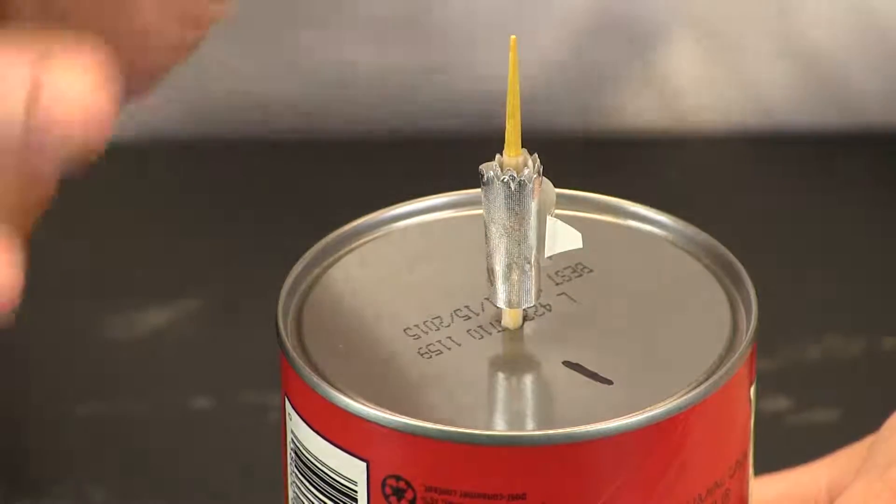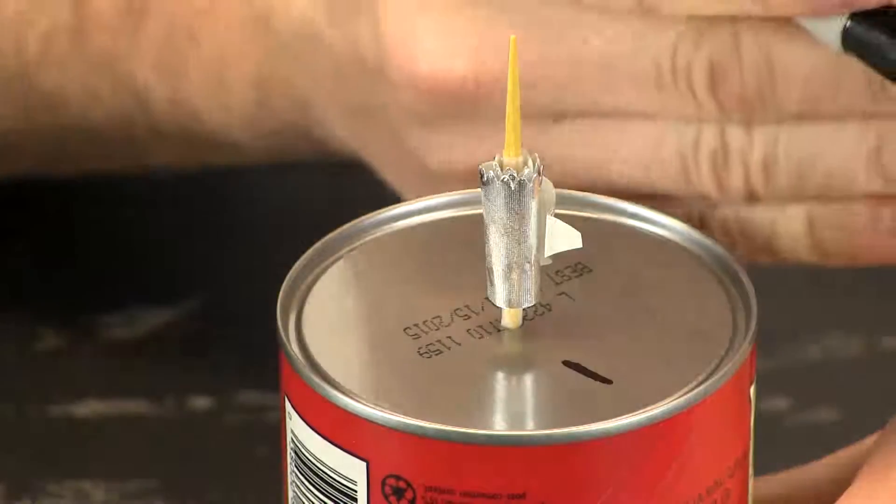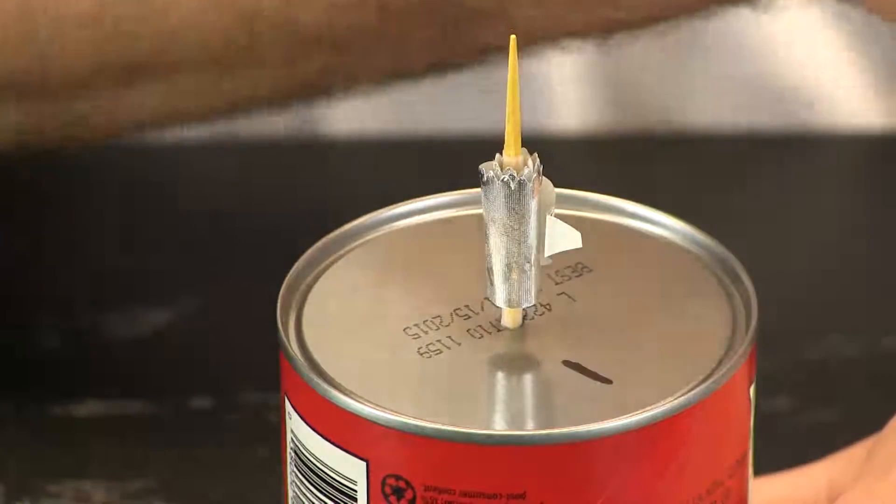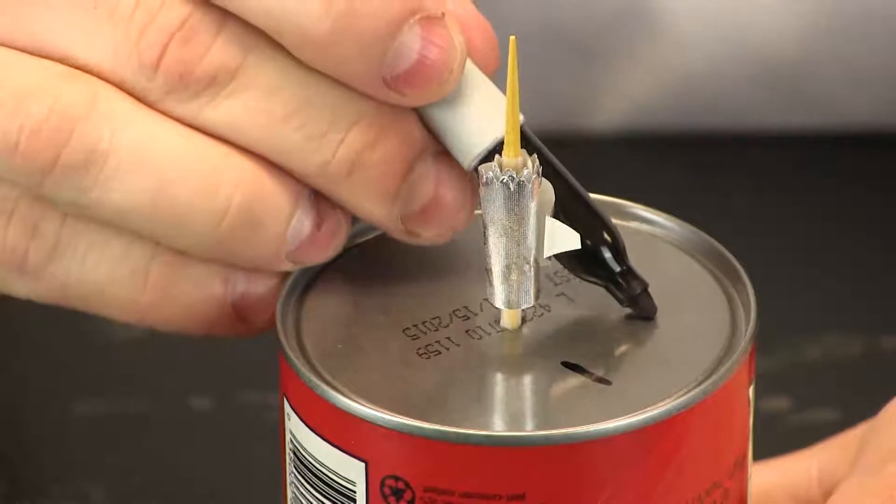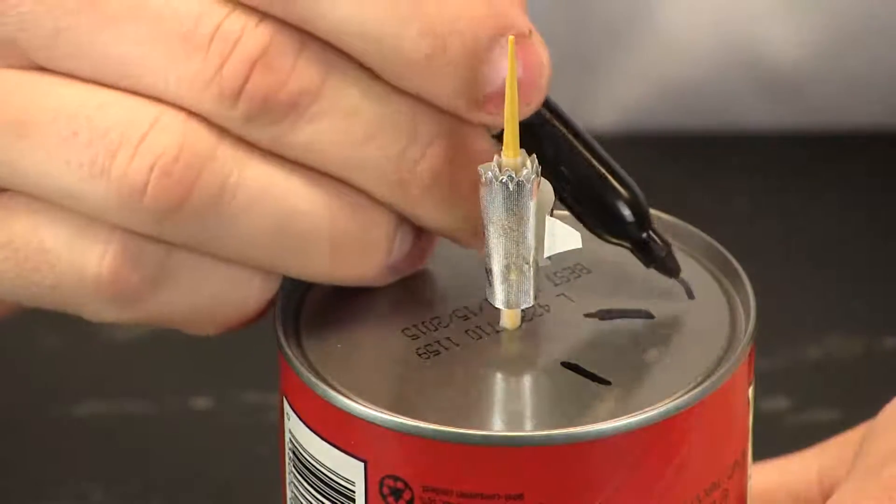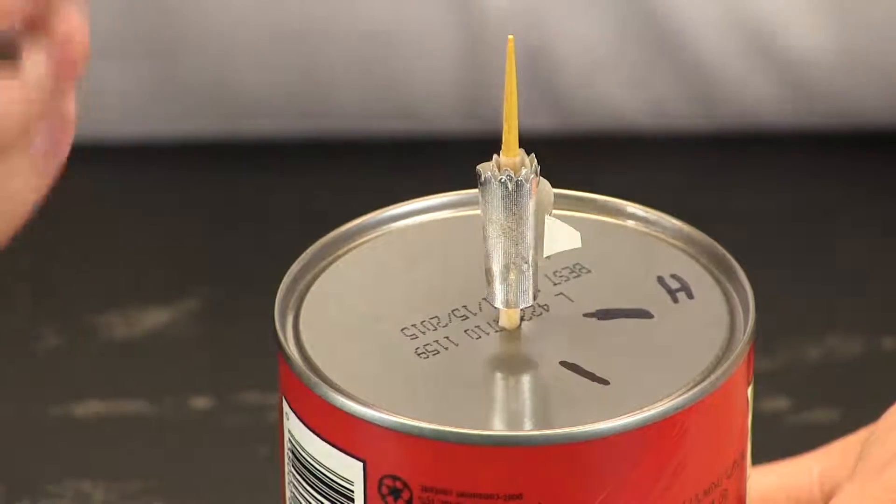Now this hygrometer works on a really simple concept, an idea. If there is more moisture in the air, this little foil pointer is going to want to unravel. It is going to want to open up, so I am going to put another line over here and I am going to write an H next to it because that means it has high humidity, high moisture in the air.